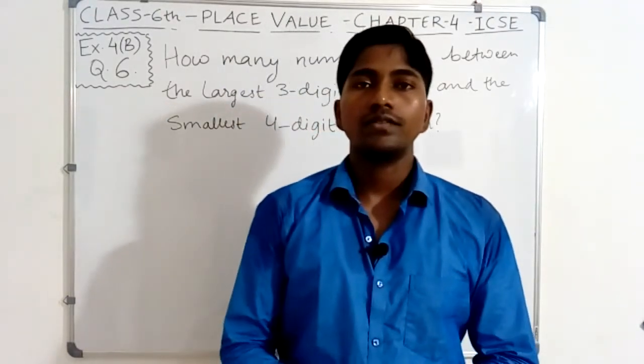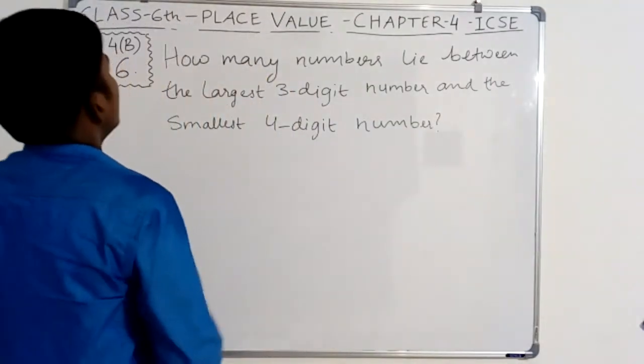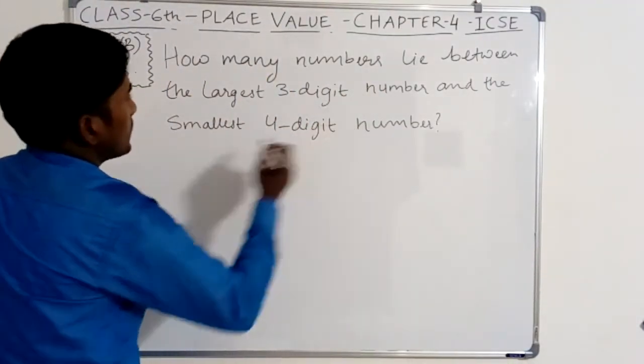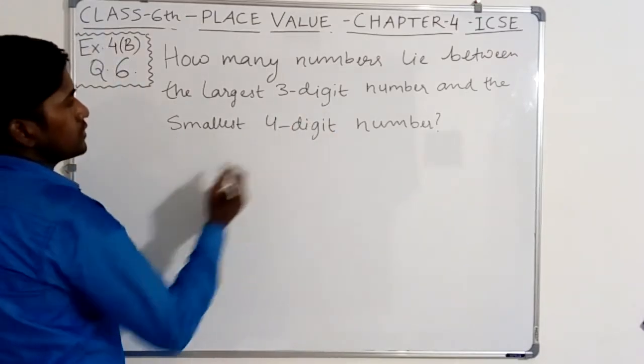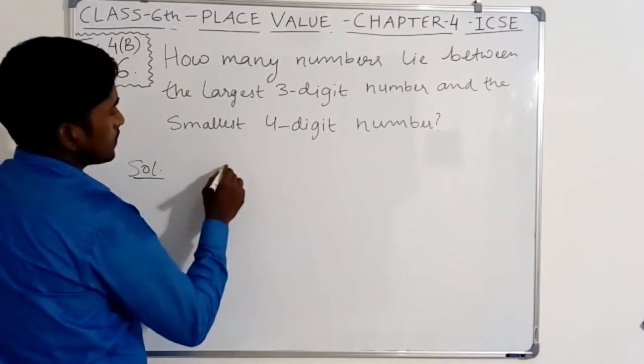Hello friends, now we are going to solve question number six from exercise 4.0. The question asks: how many numbers lie between the largest three-digit number and the smallest four-digit number?